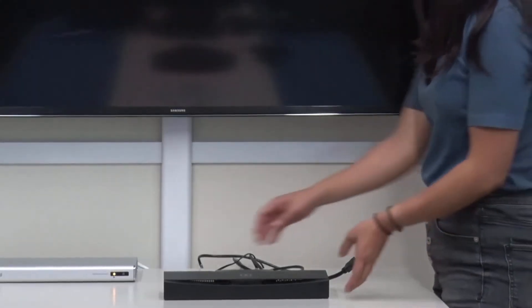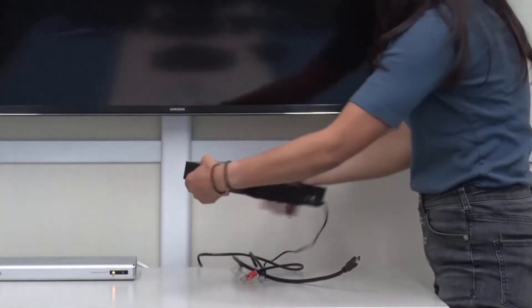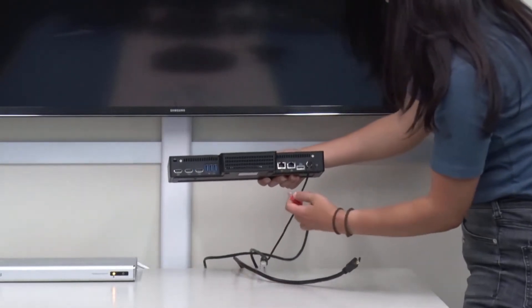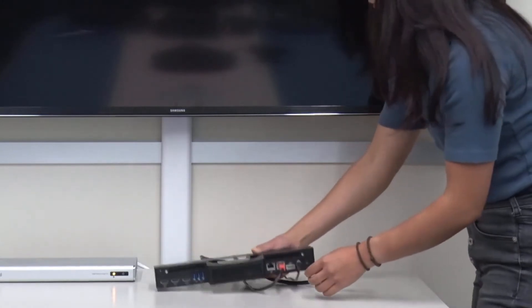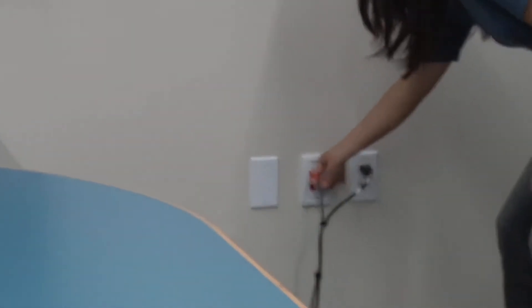Next, we're going to connect the hub to the Ethernet cable that we included in the box. Then we're going to plug the other end into our office network.